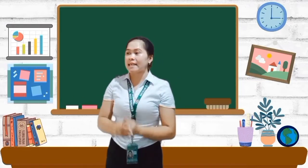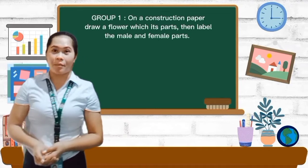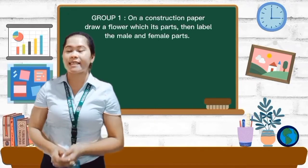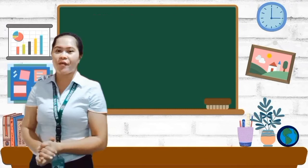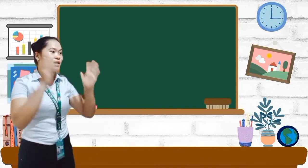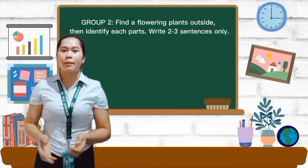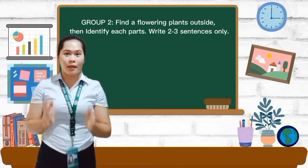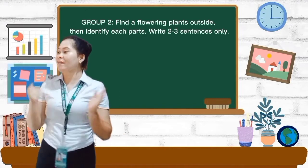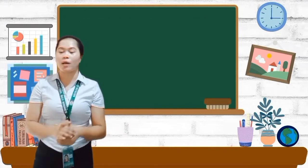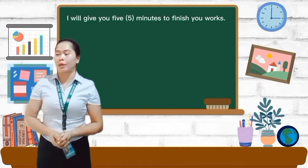So group 1, please listen because this is your instruction and your work. On a construction paper, draw a flower with its parts, then label the male and female parts. Understood? Okay, very good. So group 2, please pay attention because I will give your instruction. Group 2, find the flowering plants outside, then identify each level and write 2 to 3 sentences only. Understood? So do you have any questions?